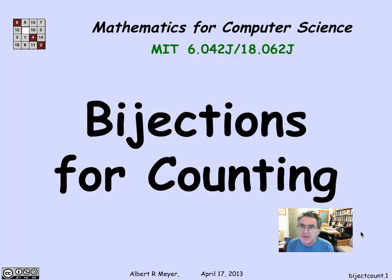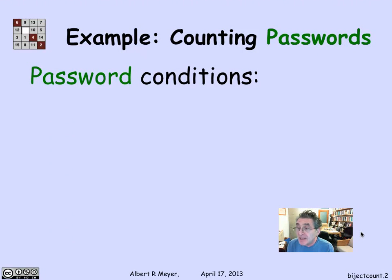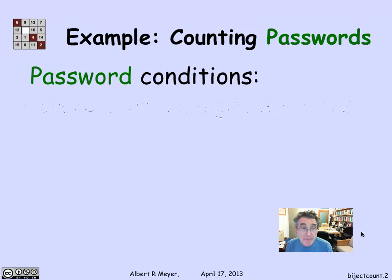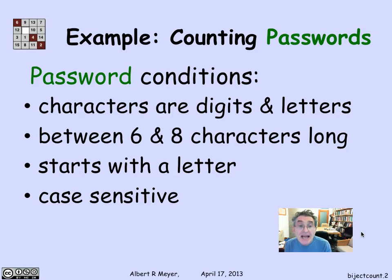Let's begin with looking at some stuff that is easy to count using just the simple sum and product rules. Suppose I'm trying to count passwords. This is a contrived, oversimplified example, but it gives you the idea. A password is a sequence of characters that are either letters or digits, subject to the constraints that they are supposed to be between six and eight characters long. They're supposed to start with a letter, and they're case sensitive.